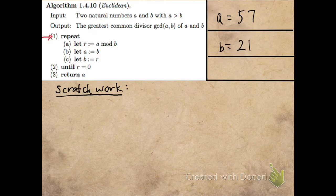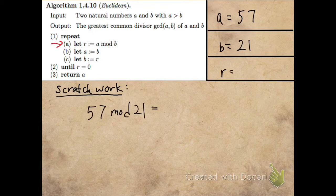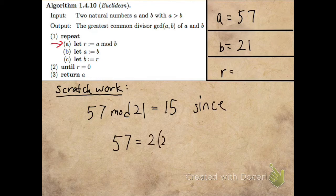I enter the repeat loop. The first step is to let R be A mod B. So R is going to be 57 mod 21, which is 15, because 57 can be expressed as 2 times 21 plus 15.